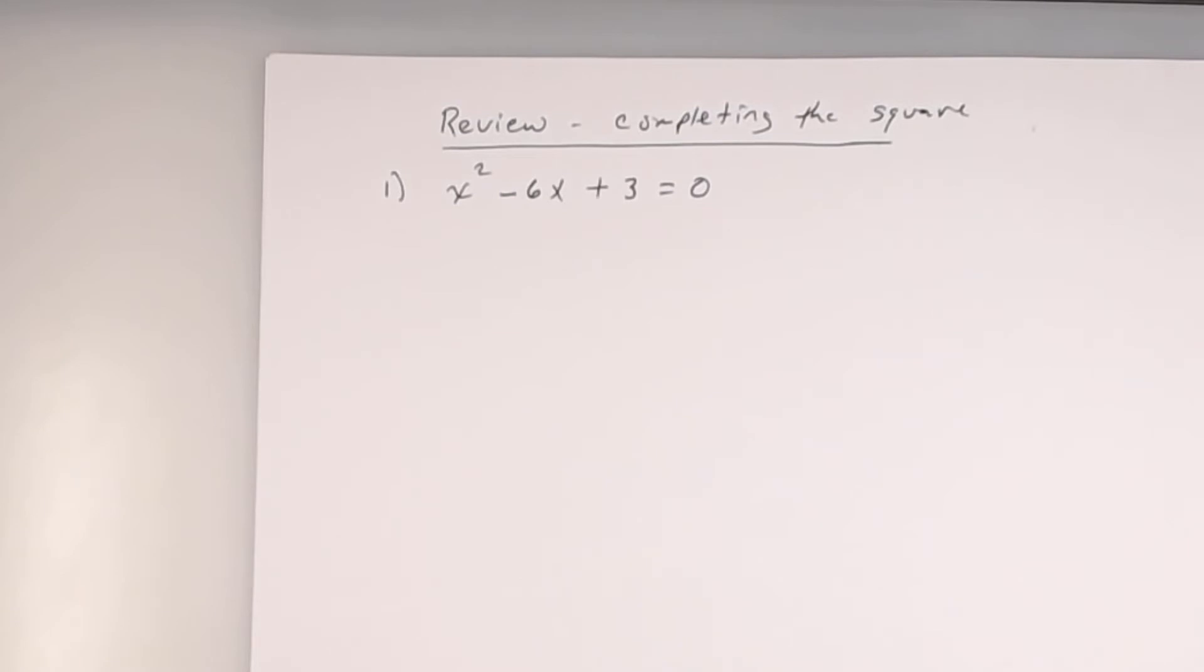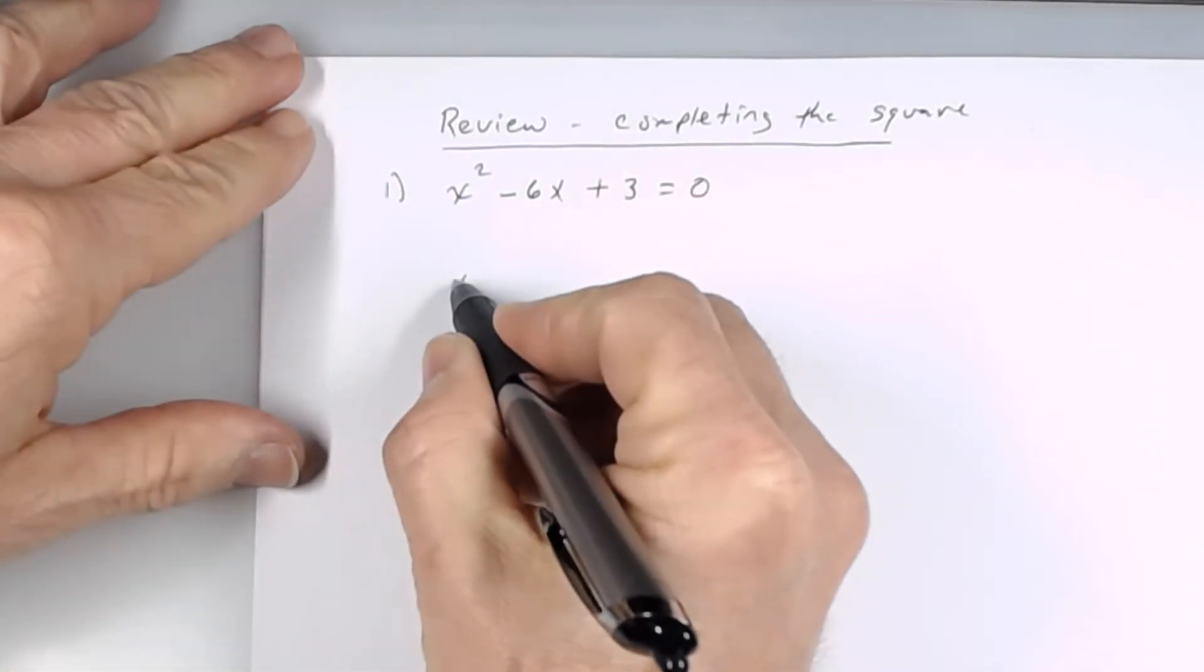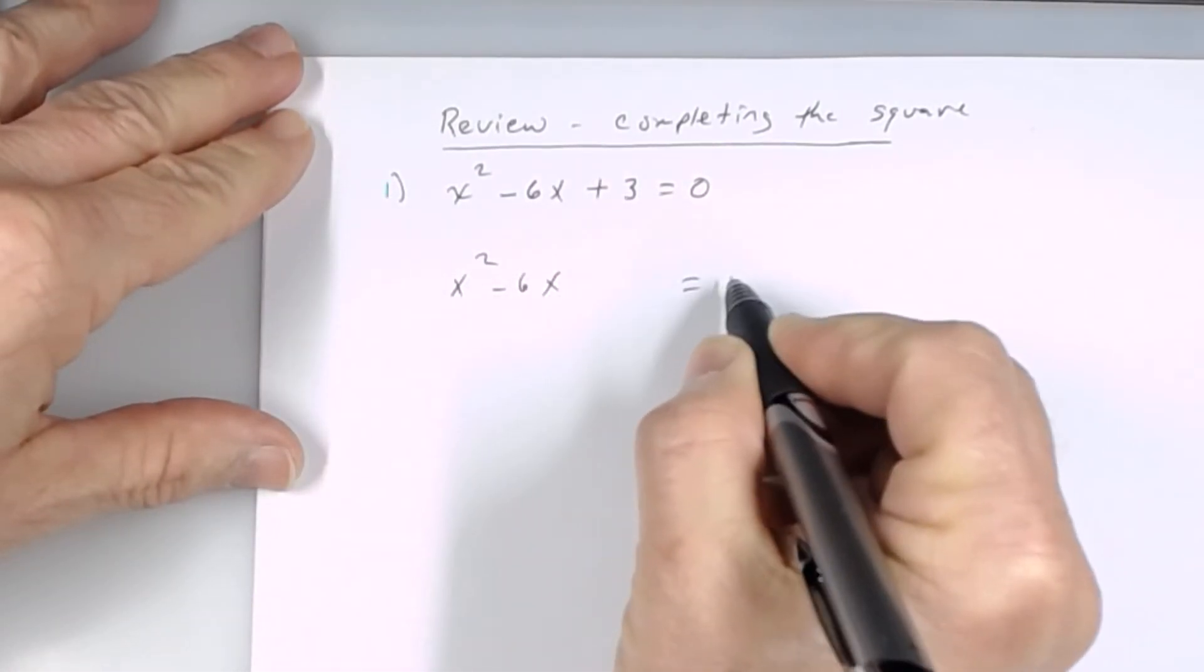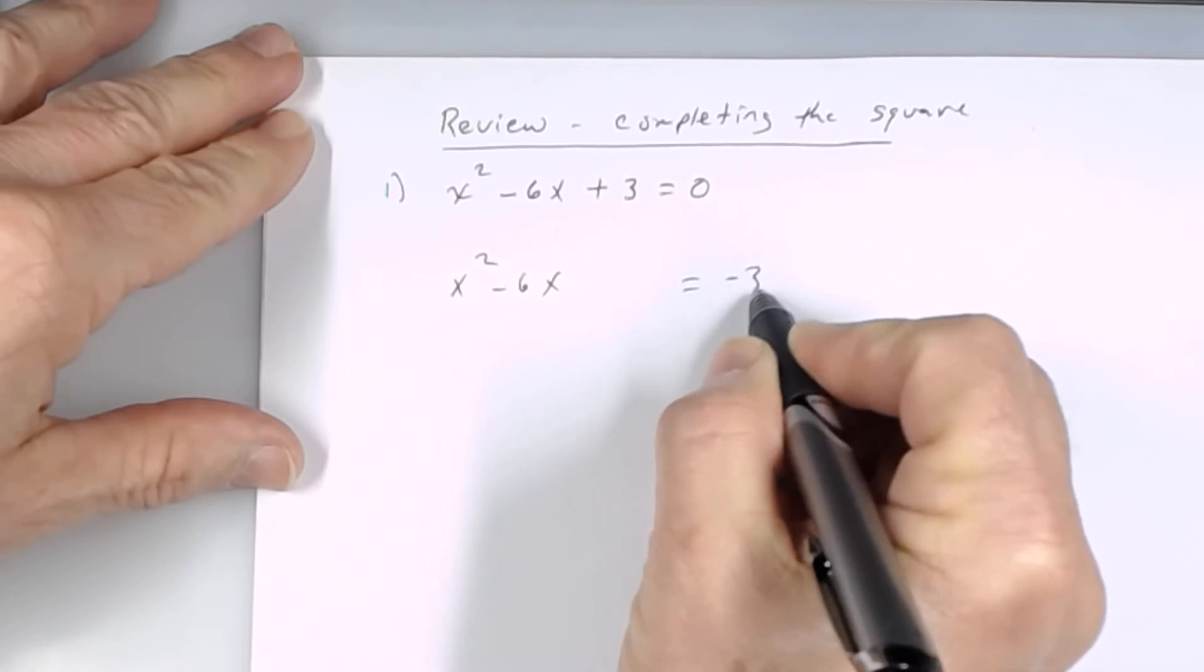So I'm going to subtract 3 from both sides. And remember, we're going to leave some space. So I've got x squared minus 6x. Leave some space, and that's going to equal what? Negative 3. Negative 3.